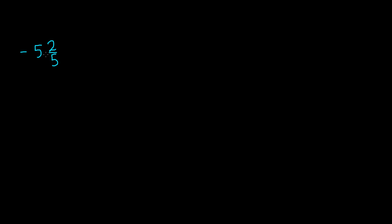Let's go ahead and do our last example. This time we have a negative mixed number — negative 5 and 2 fifths. We see that we have a mixed number, so we have to change it into an improper fraction. We can leave the negative sign alone, change it into an improper fraction, and then add the negative sign back. So if we take 5 and 2 fifths, we first multiply 5 by 5 to get 25, then add that to the numerator which is 2. So 25 plus 2 is 27. The new numerator is 27 and we keep the same denominator of 5. Remember to add back the negative sign, so the improper fraction is going to be negative 27 over 5.